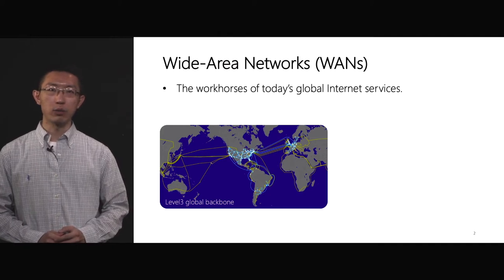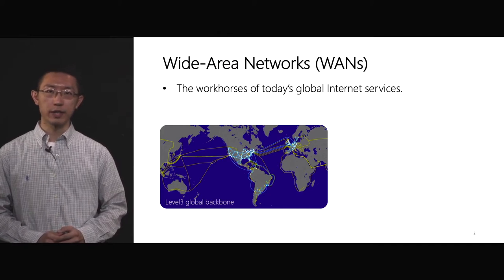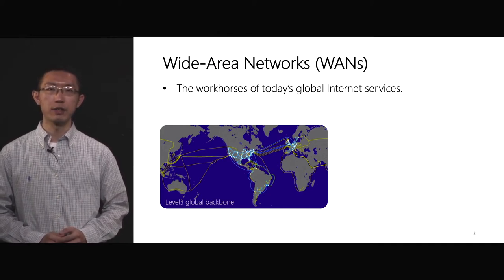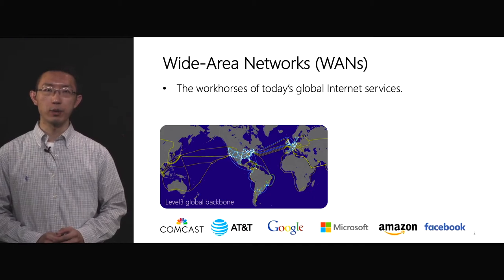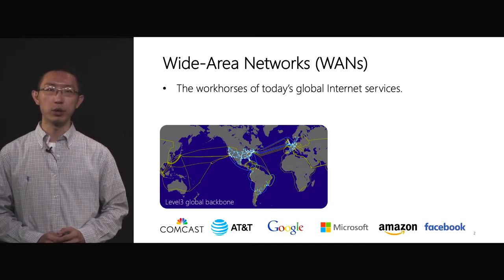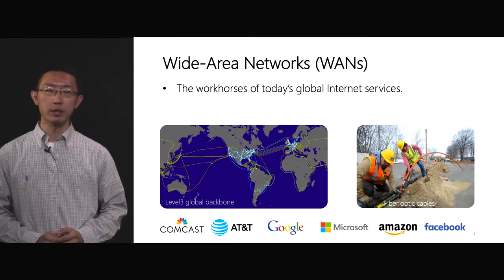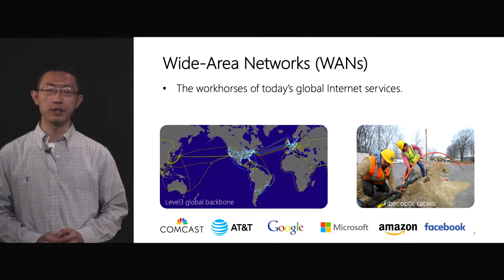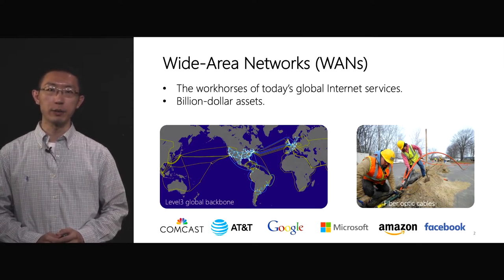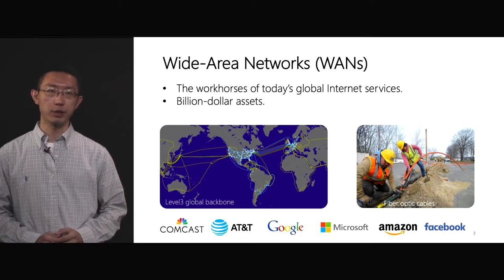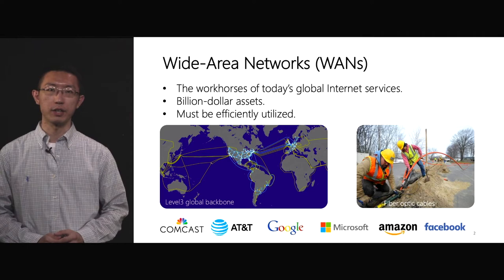Wide area networks are the workhorses of today's global internet services. All major online service providers like Comcast, AT&T, and Google own and operate their private WANs. All these global scale backbones are built using optical fibers across continents and oceans. Because building and maintaining a global scale network costs billions of dollars, it is important for WANs to be efficiently utilized.